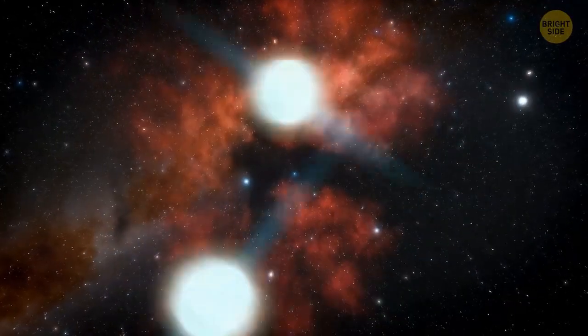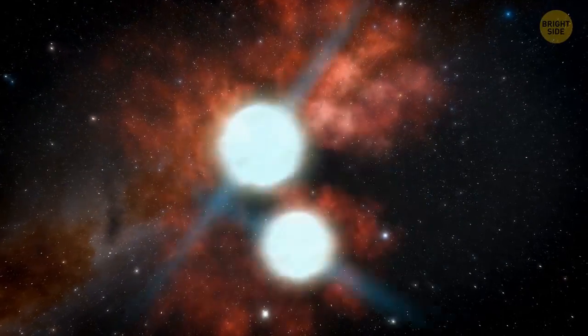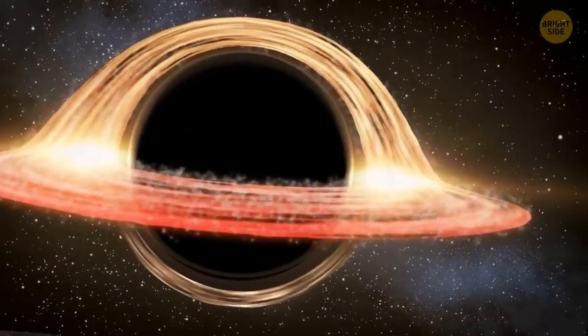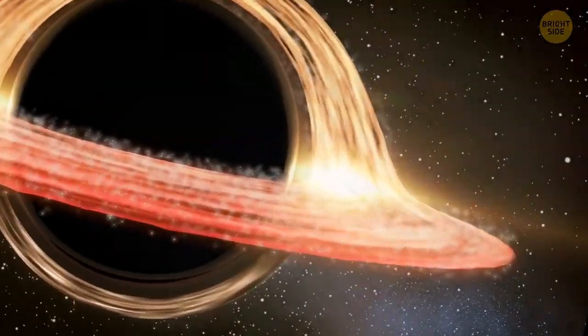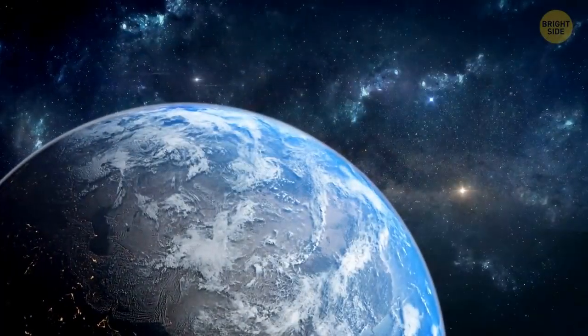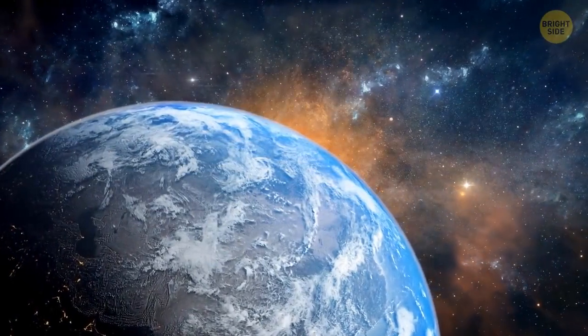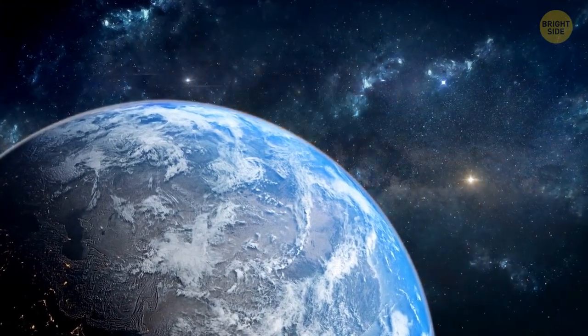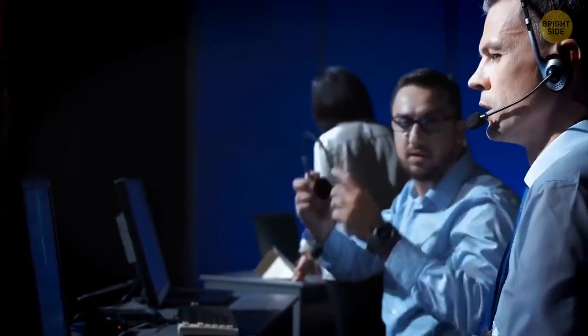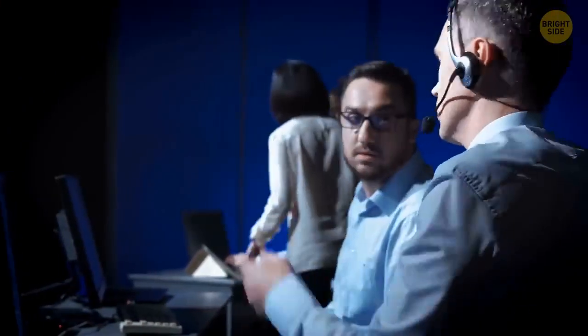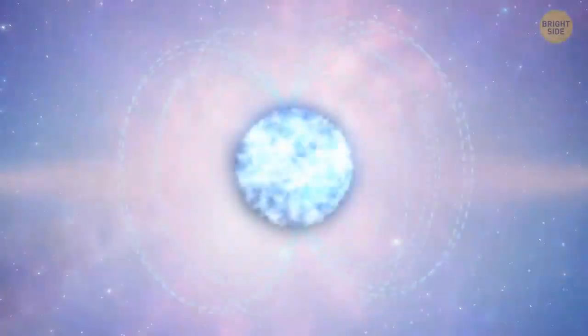When two neutron stars merge, they most often create a new, much heavier one. Within milliseconds or even less, this star collapses into a black hole. But the astronomers who examined the flash of light recorded in March think there might be another outcome. They're almost sure they saw something never observed before. The birth of a magnetar.